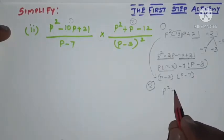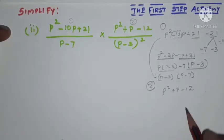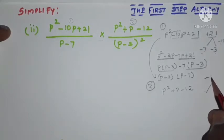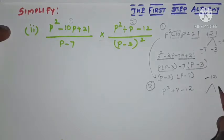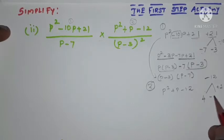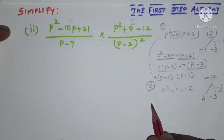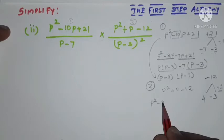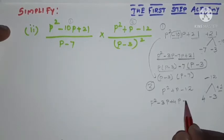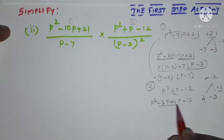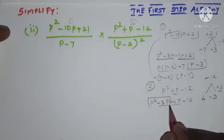Now the second polynomial is p squared plus p minus 12. Same way, we need two numbers: multiplying gives minus 12 and adding gives plus 1. Plus 4 and minus 3 are those two numbers — multiply to give minus 12, add to give plus 1. So p squared plus p minus 12 is written as p squared minus 3p plus 4p minus 12.